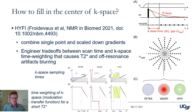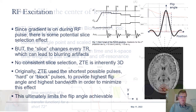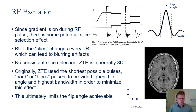Another exciting approach combines the best of PETRA's single point imaging and WASP's scaled-down gradient approach into a technique called HYFI, where we can engineer the trade-offs between scan time and k-space time weighting — the modulation transfer function — that can lead to T2* and off-resonance blurring. PETRA gives consistently high signal for short times, while the radial acquisition in WASP can lead to signal decay over the center of k-space, whereas HYFI can do a mixture of both.